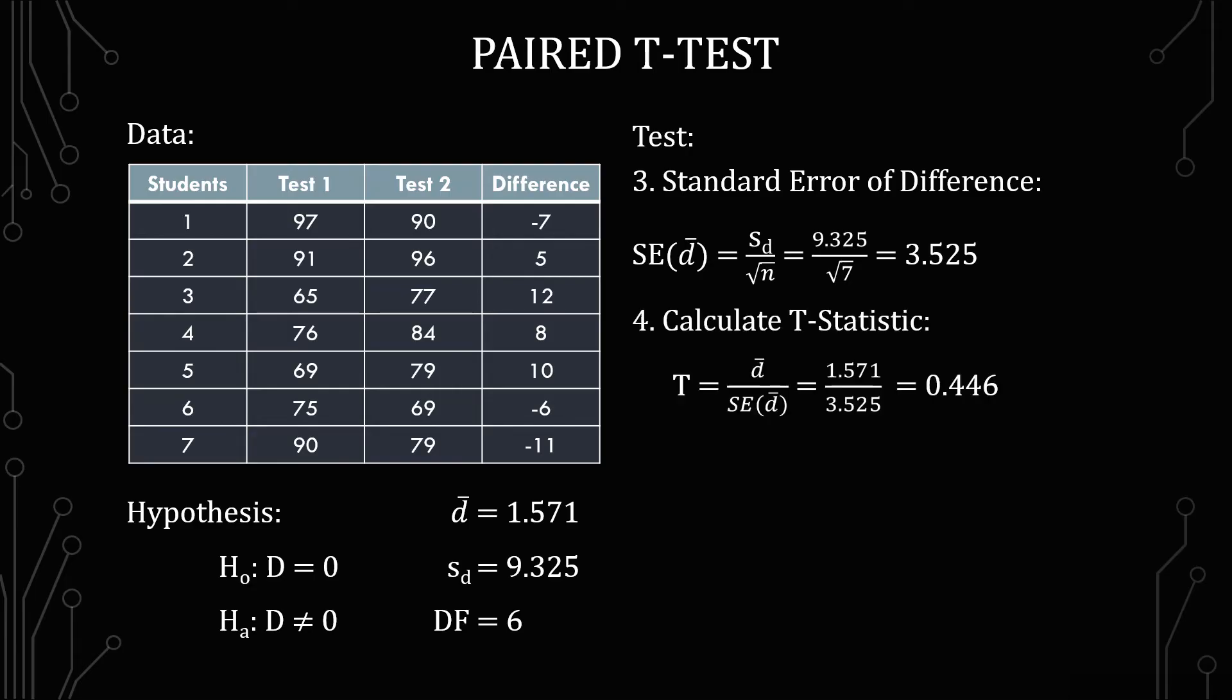The next thing is to calculate the t-statistic itself. We have t equals the average of the differences over the standard error of the differences. This gives us 1.571 over 3.525, which yields 0.446.